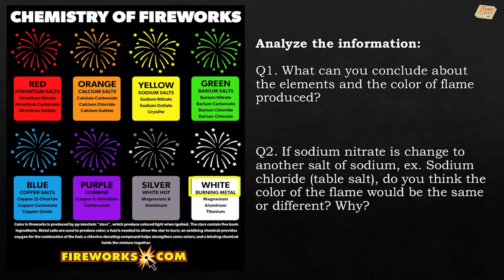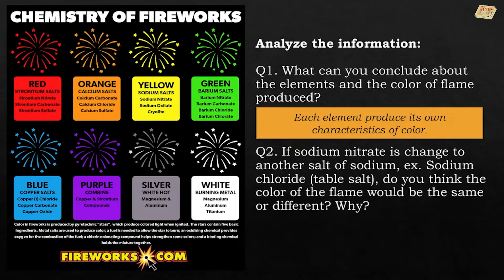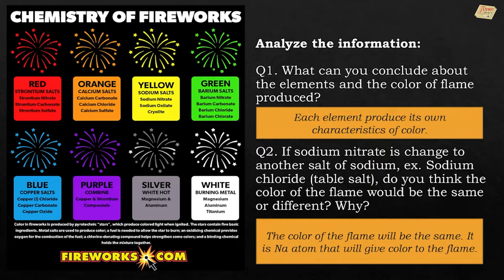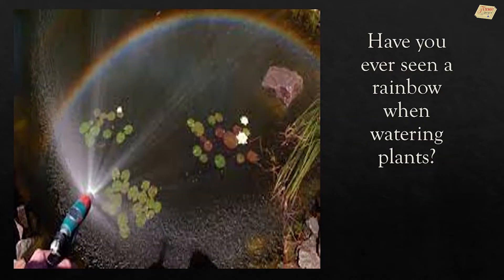White color is produced if magnesium, aluminum, and titanium are present. Each element produces its own characteristic color. If sodium nitrate is changed to another sodium salt, such as sodium chloride, the color of the flame would be the same — it is the sodium atom that gives color to the flame.